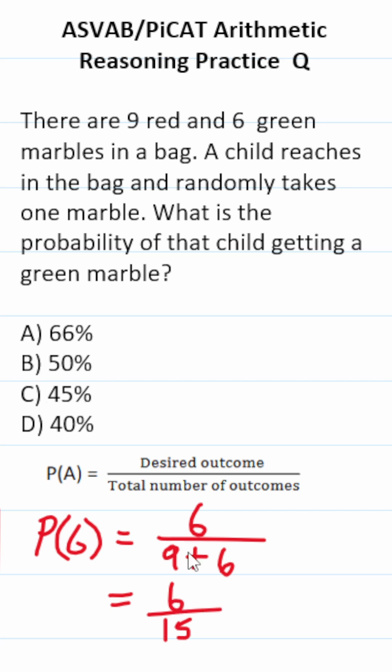We want to express this as a percent. So let's reduce this by a common factor of three. 6 divided by 3 is 2. 15 divided by 3 is going to be 5.